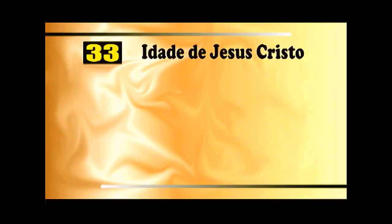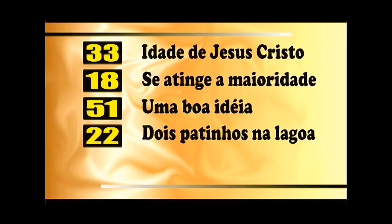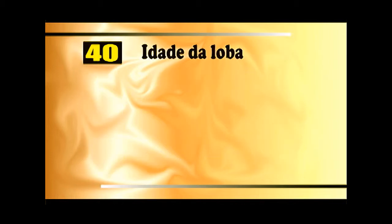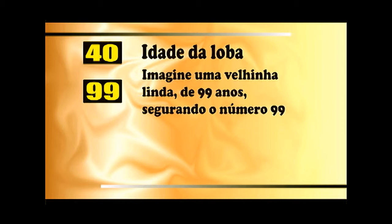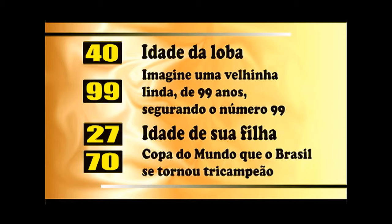Exemplos: 33 — idade de Jesus Cristo. 18 — ano que se atinge a maioridade. 51 — uma boa ideia. 22 — dois patinhos na lagoa. 72 — a idade do seu irmão. 40 — idade da loba. 99 — imagine uma velhinha bem linda de 99 anos segurando o número 99. 27 — a idade da sua filha. 70 — copa do mundo que o Brasil se tornou tricampeão mundial de futebol. Ou seja, podemos associar os números com informações já existentes em nossa vida, com informações populares, ou ainda podemos inventar algo para associar com qualquer número.